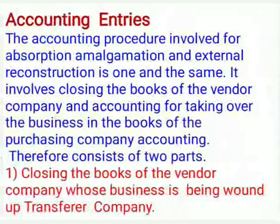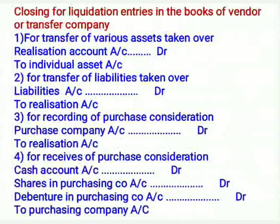Therefore, accounting consists of two parts. First part: closing the books of the vendor company whose business is being wound up — the transfer company. Closing for liquidation entry in the books of the vendor or transfer company.